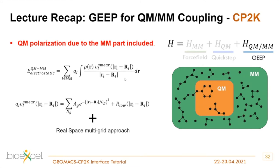GEEP is a QM/MM coupling scheme implemented in CP2K. Basically, your whole system has a QM part and an MM part (shown in green), and you want to include the effect from the MM point charges into the QM system. In CP2K, you expand each Gaussian electrostatic potential - which is just a Coulombic 1/r potential - into several Gaussians, and then project those Gaussians onto the multigrid of your QM system, just like you do with QM Gaussian basis functions.